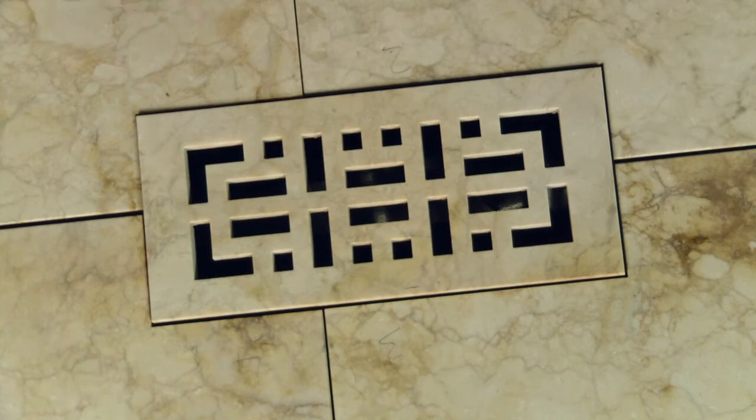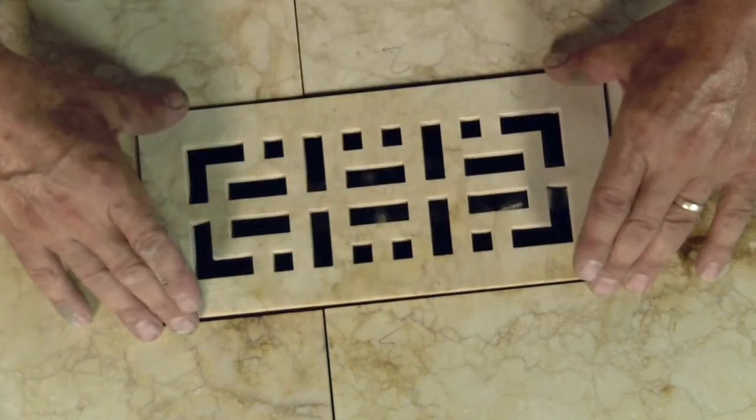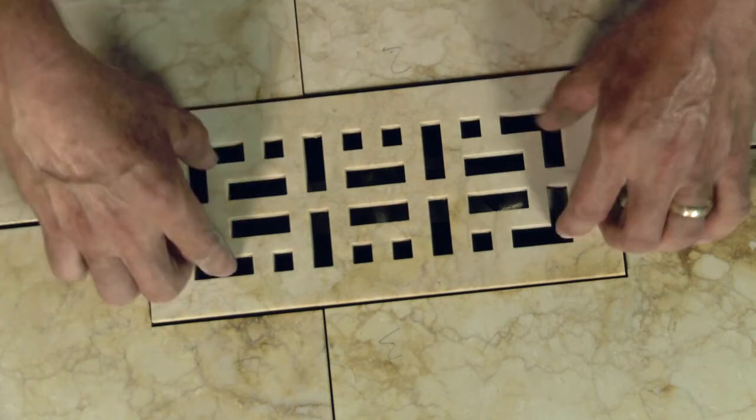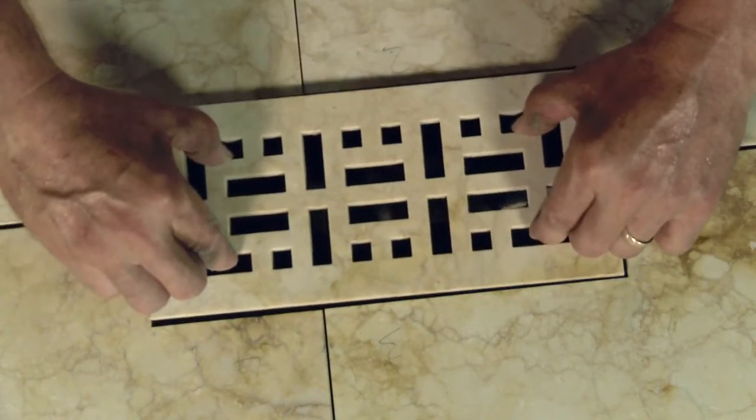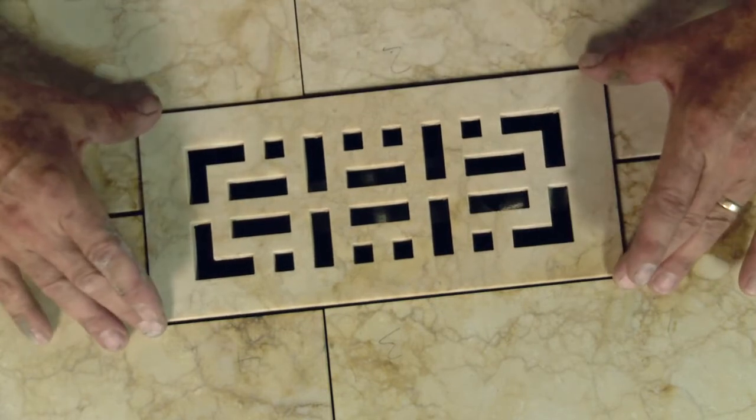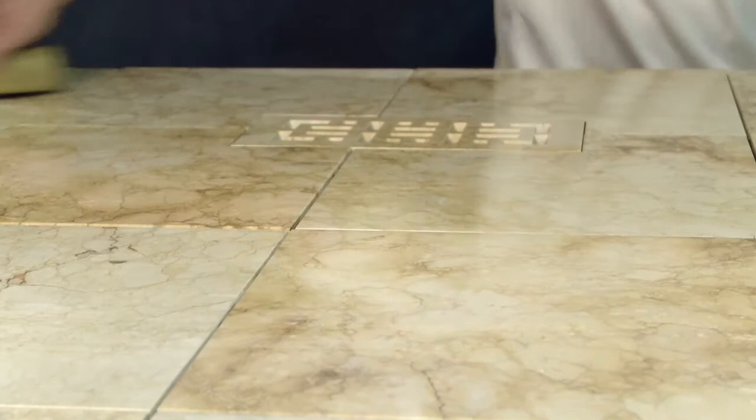You can grout around the vent, preferably with a removable caulking, so you can remove the vent to clean it out at any given time. And that is an installation of a stone vent made by Accents of Distinction.